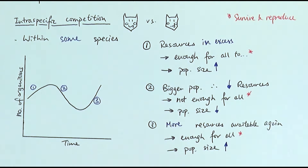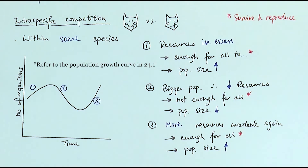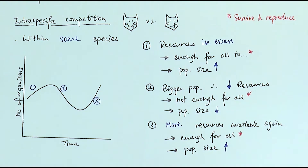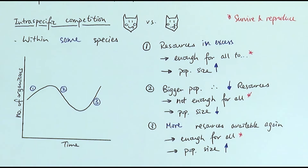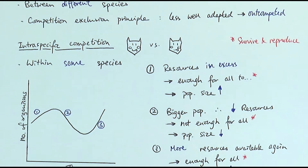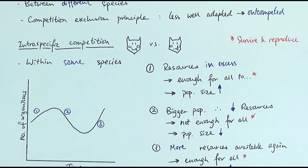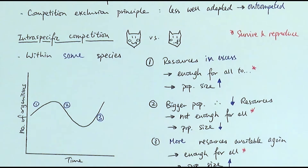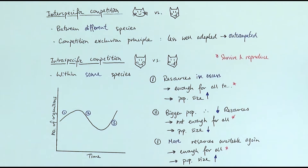You can see the population fluctuates — it's similar to the stable state discussed in the previous video about population size. After the first two stages, the population size tends to maintain at a similar level. In reality it is more complex, because in an ecosystem you will also have interspecific competition, so it's important to consider both types.